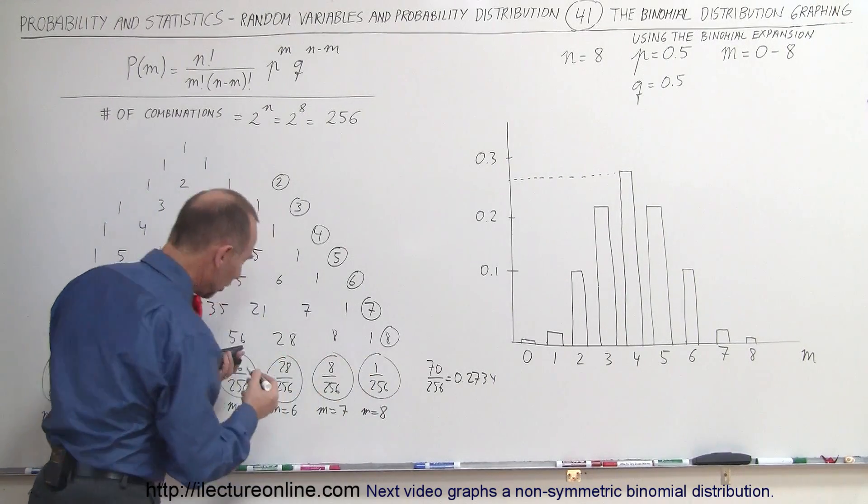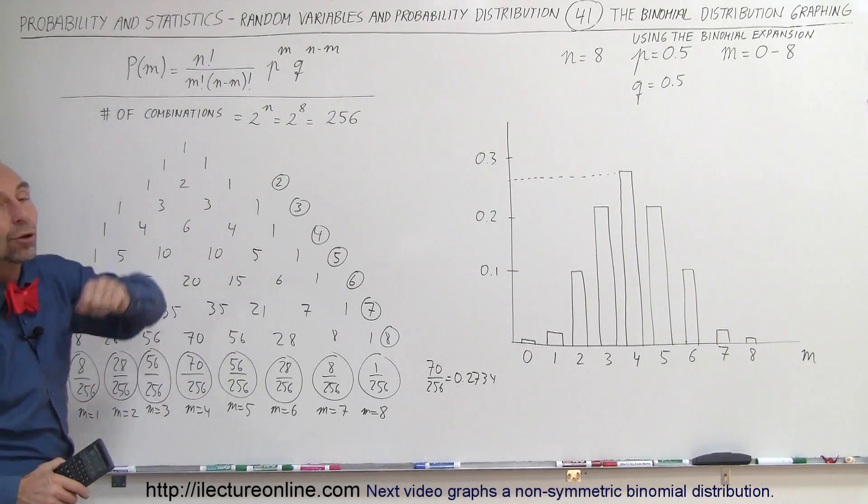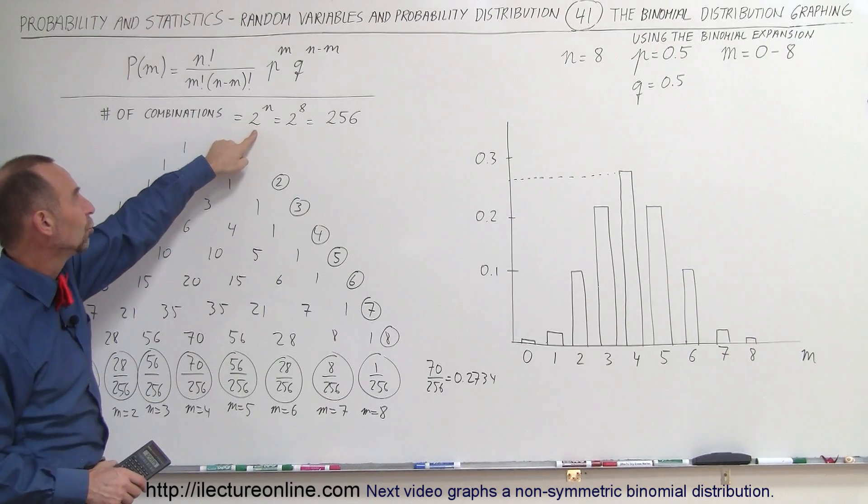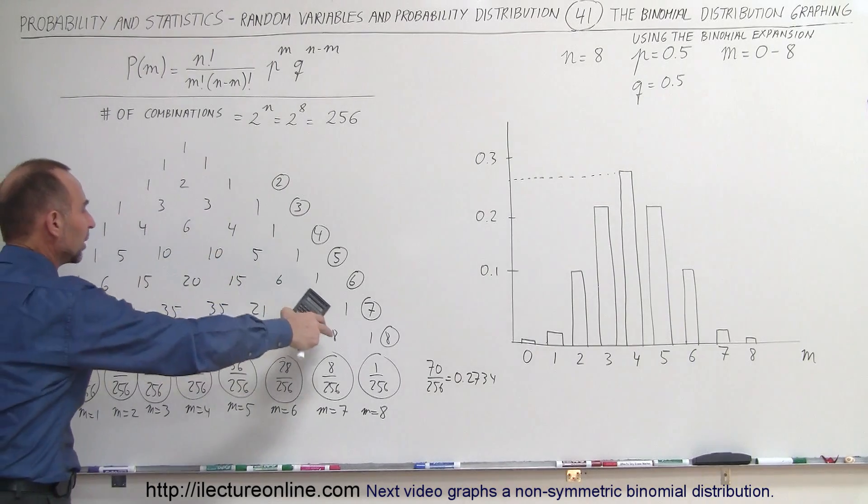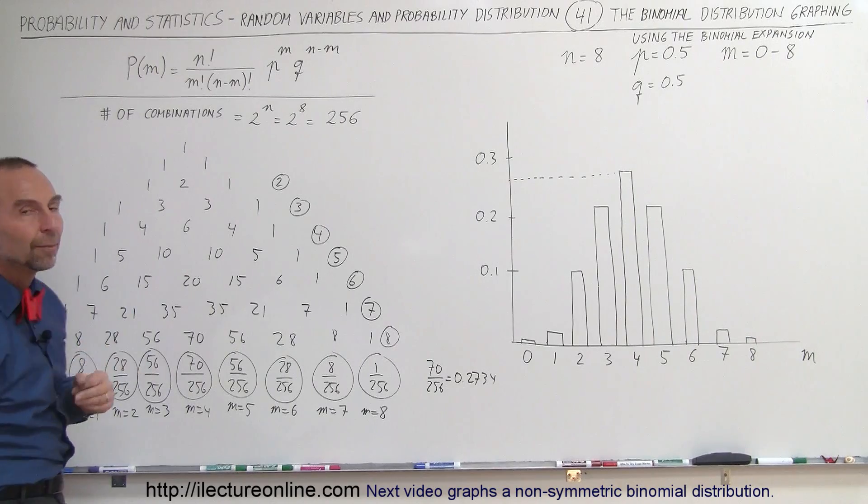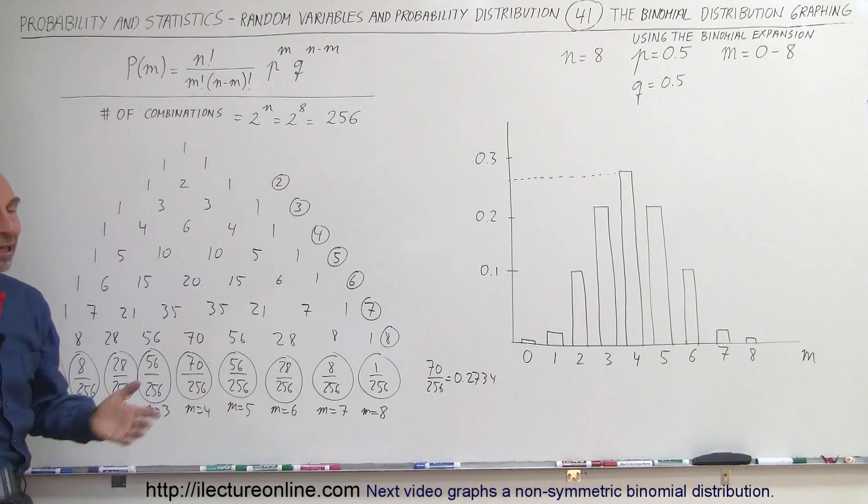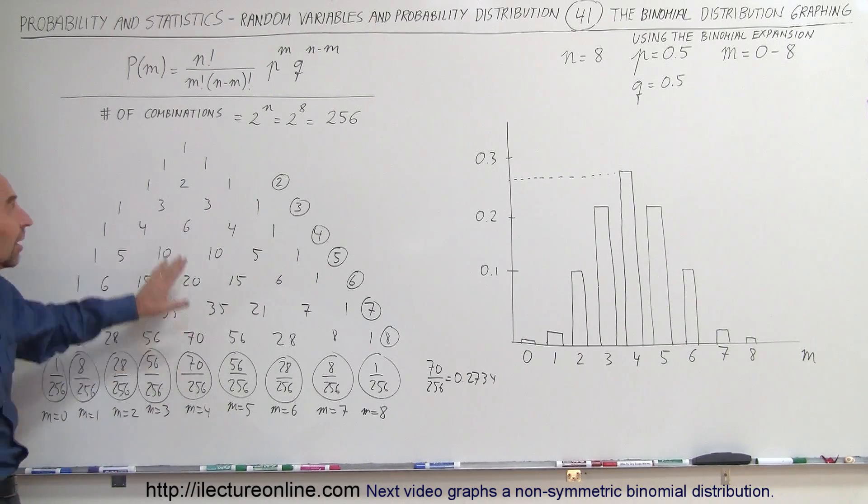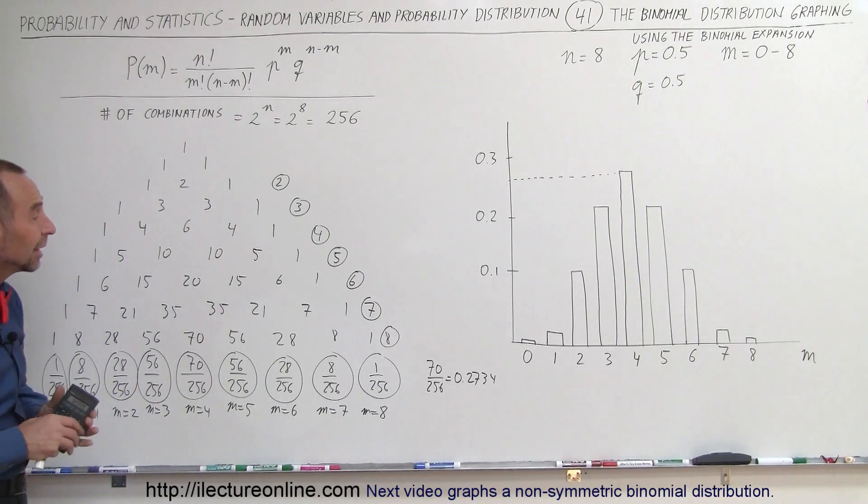And so we can go ahead and use the general equation, or we can use what we call the binomial expansion methodology, where we first find the total number of combinations, 2 to the end number of trials, and then we take the coefficients of binomial expansion to come up with the probabilities of all the possible cases we could possibly want. And then we can go ahead and graph it, and it looks exactly the same. Now, this is probably a little bit faster method than using this equation right here, because that can be kind of lengthy working out with your calculator.